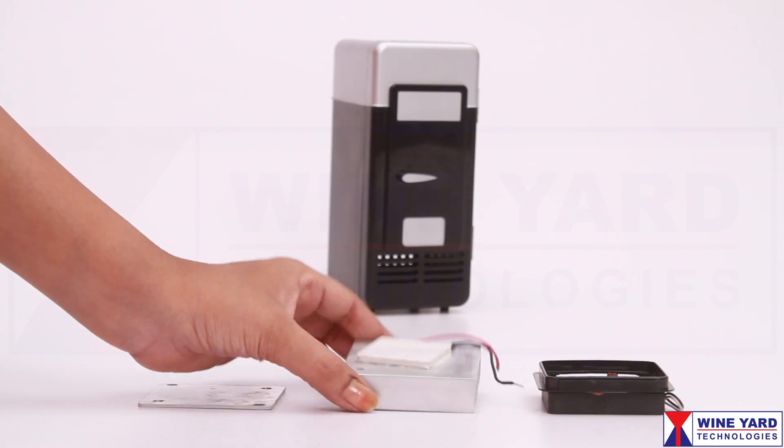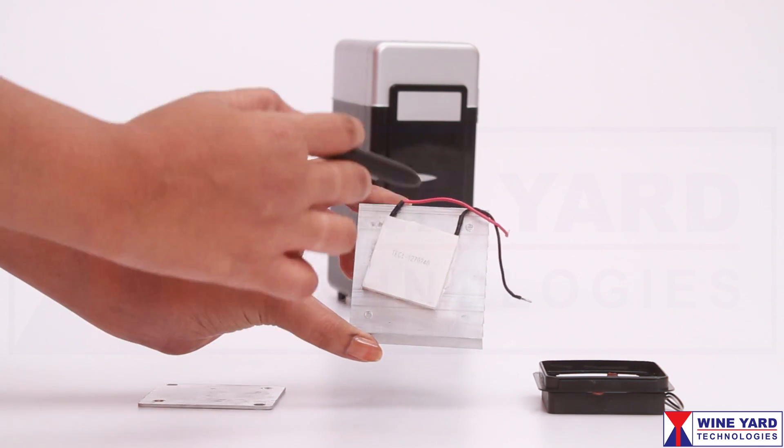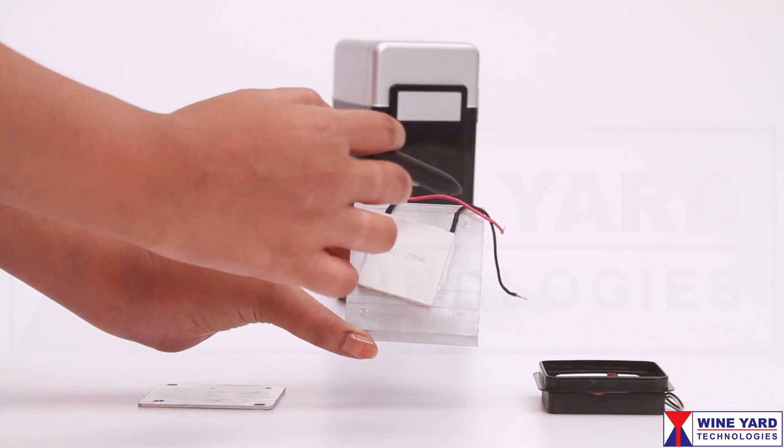This is a thermoelectric Peltier plate fitted with a heat sink. This plate turns cool on positive biasing and turns warm on reverse biasing.